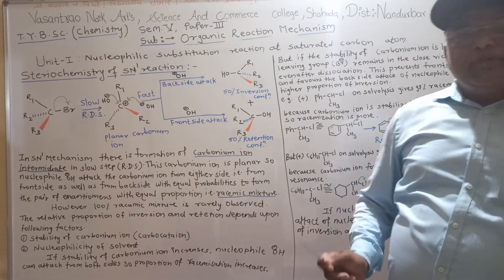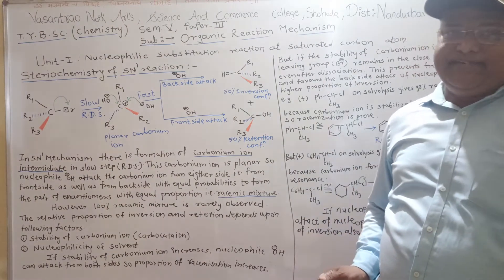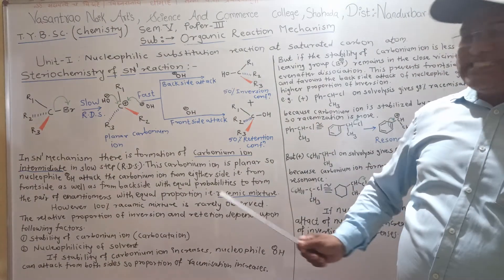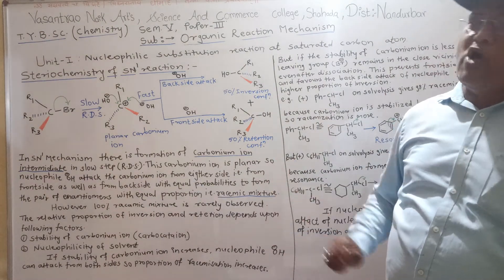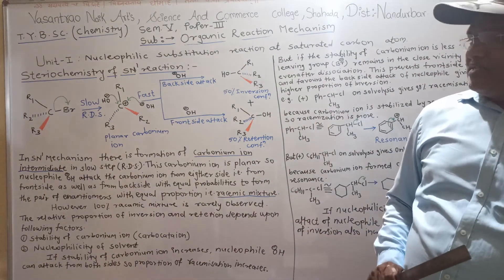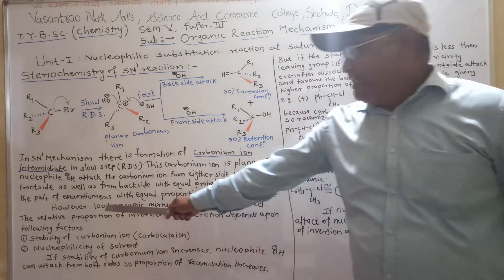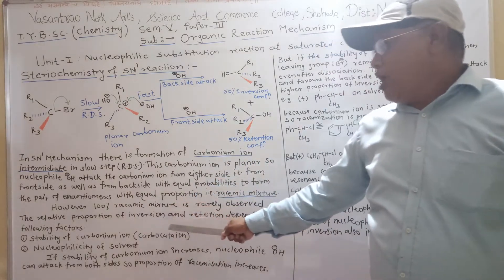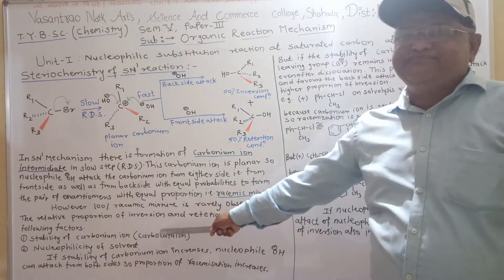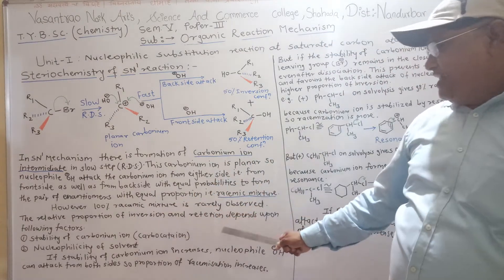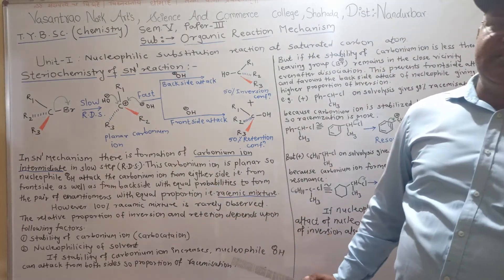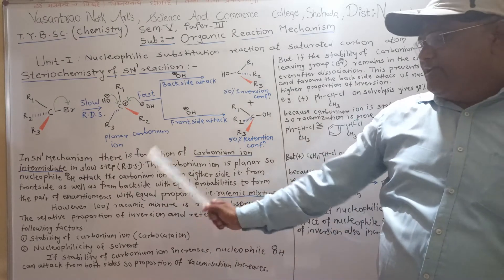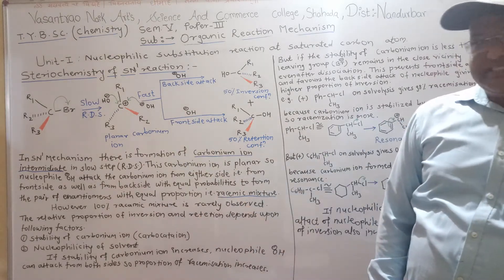The mixture of 50% inversion of configuration and 50% retention of configuration is called a racemic mixture. However, 100% racemic mixture is rarely formed. The relative proportion of inversion and retention depends upon the following two factors.